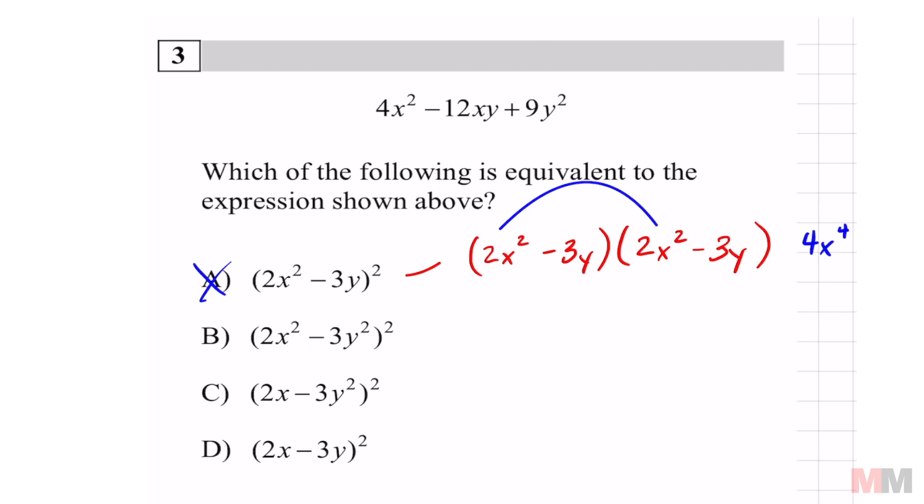And for the same reason B, if you do that same thing, because you're going to have to multiply that to itself twice, that's also going to get me 4x to the fourth power. So you know that that one's wrong.